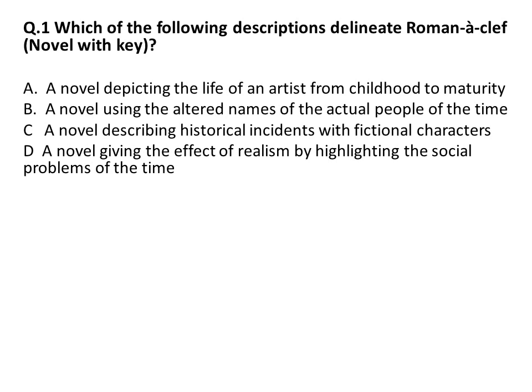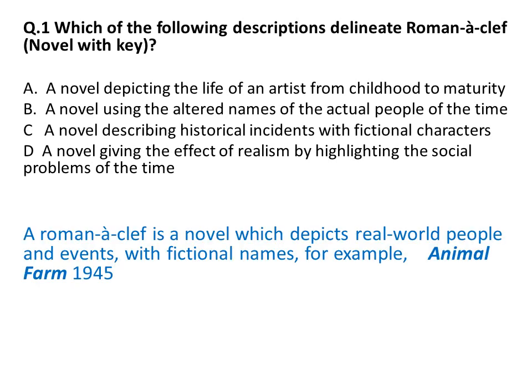Which of the following descriptions delineates the Roman à Clef novel? The options are: a novel depicting the life of an artist from childhood to maturity; a novel using the altered names of actual people of the time; a novel describing historical incidents with fictional characters; a novel giving the effect of realism by highlighting social problems of the time. The answer is: a Roman à Clef is a novel which depicts real-world people and events with fictional names.